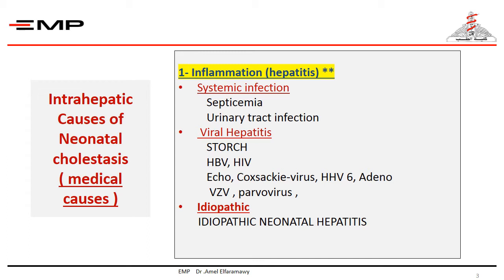Perinatal infections could be acquired transplacentally or during labor due to contact with maternal secretions. Idiopathic neonatal hepatitis, sometimes called giant cell hepatitis, is the most common cause of intrahepatic cholestasis. It is diagnosed after exclusion of other causes, whether infectious, genetic, metabolic, or extrahepatic biliary atresia.